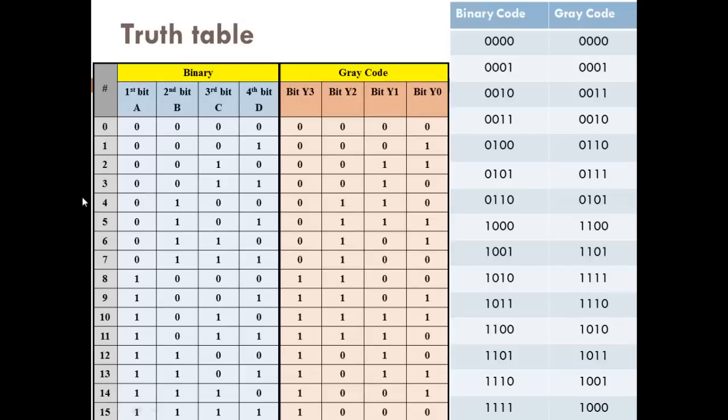The first step to design this device is to initiate 4-bit truth table for the BCD code and its corresponding gray code where we have ABCD as inputs for the representing binary codes. And we have in the counterpart Y3, Y2, Y1 and Y0 as a gray code.